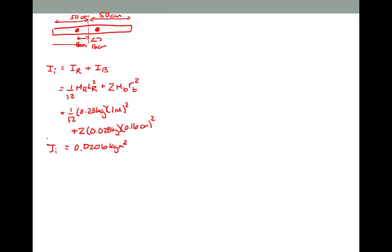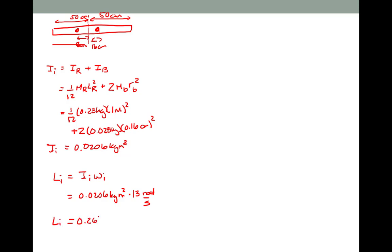We can now find the initial angular momentum. It will be the initial moment of inertia multiplied by the initial angular velocity — that will be 0.0206 kilogram meter squared times 13 radians per second — working out to an initial angular momentum of 0.2678 kilogram meter squared per second.